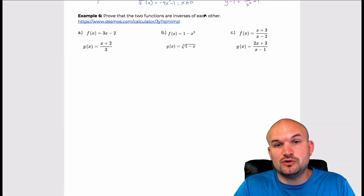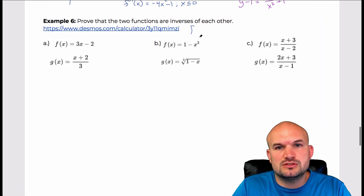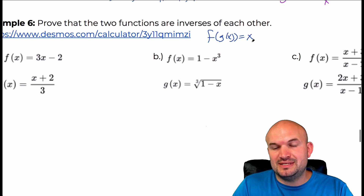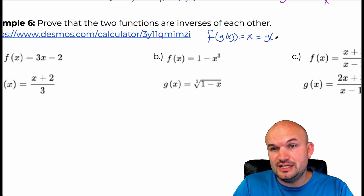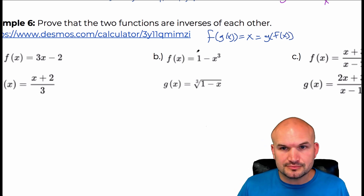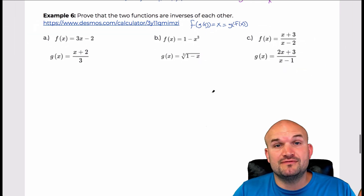Basically, if I compose — let's zoom in here — if I take f of g of x and that gives me the identity element x, then that better equal g of f of x if those two functions are inverses of each other. This kind of goes back to understanding that identity element, which goes back to our understanding of the warmup.